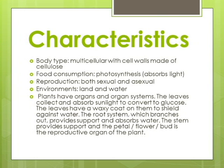The leaves collect and absorb sunlight to convert to glucose. The leaves have a waxy coat on them to shield against water. The root system, which branches out, provides support and absorbs water. The stem provides support, and the petal, flower, and bud is the reproductive organ of the plant.